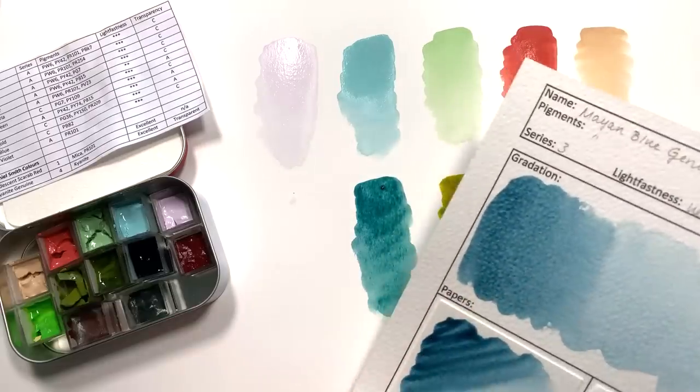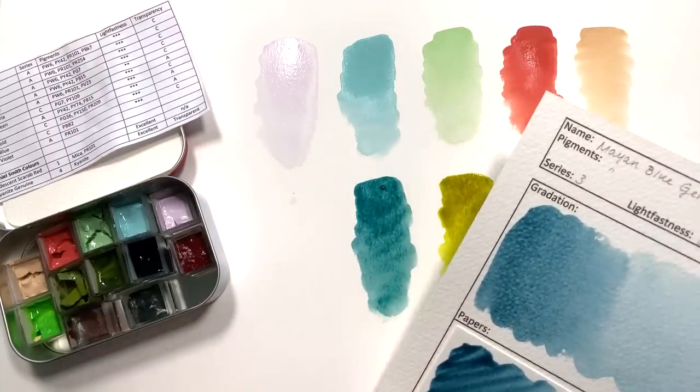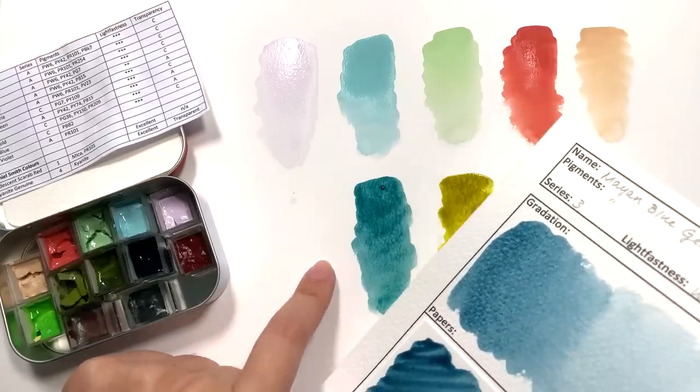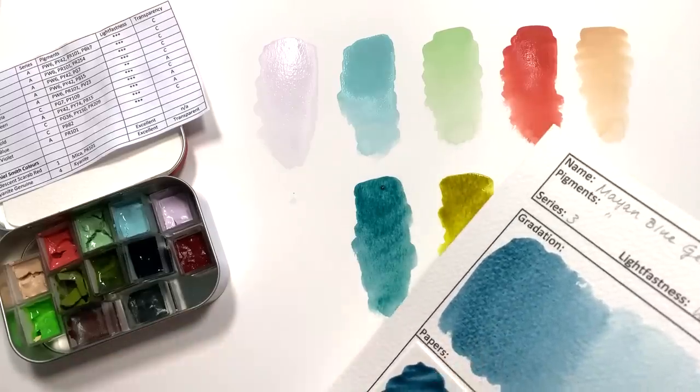This is Daniel Smith's Mayan blue, as you've seen it in my Primatex series. And you can see that this is a lot more turquoise-y than the Daniel Smith's Mayan blue.